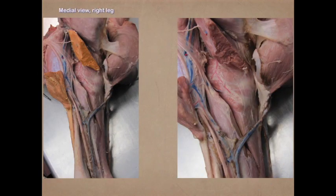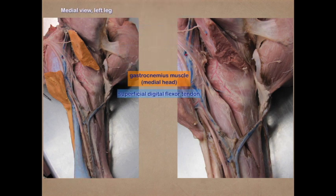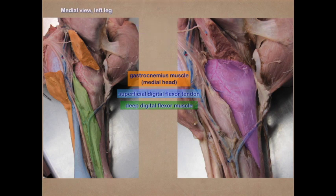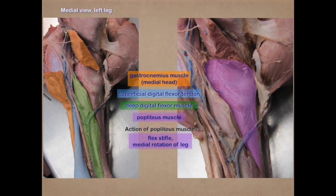In this image we've cut and reflected the medial head of the gastrocnemius muscle. We can see the superficial digital flexor tendon, the deep digital flexor muscle, and the popliteus muscle. The popliteus muscle — remember its action — is going to flex the stifle and also cause medial rotation of the leg.